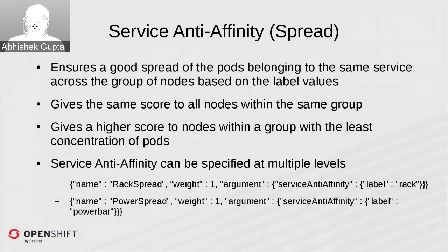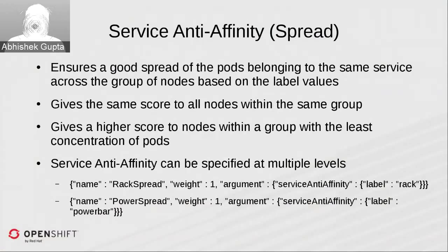The way anti-affinity works: the priority function gives the same score to all nodes within the same group. So if a pod already exists on one node in a particular rack, all nodes within that rack receive the same score. Nodes in another rack with no pods receive a higher score, causing the scheduler to prioritize those nodes over the rack where a pod already exists for that service.